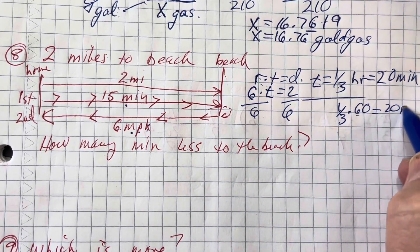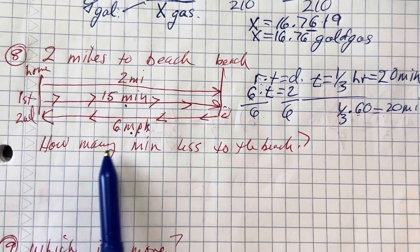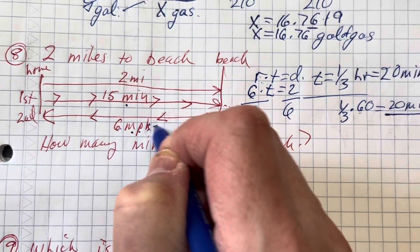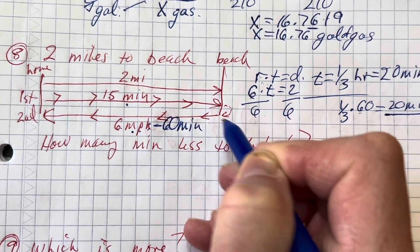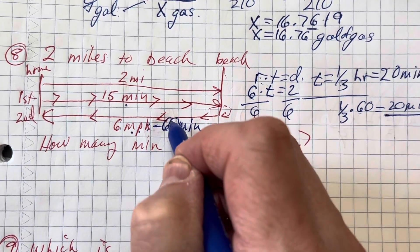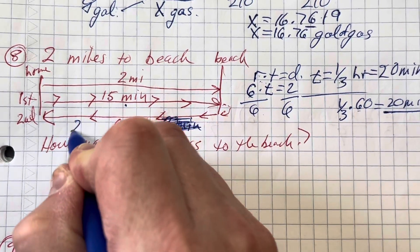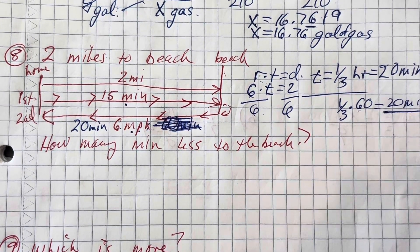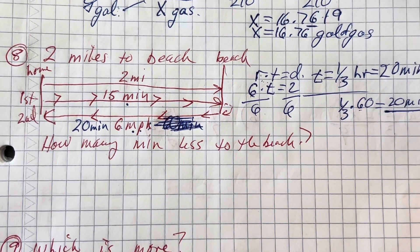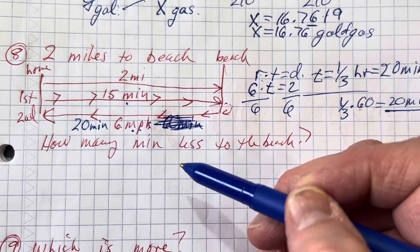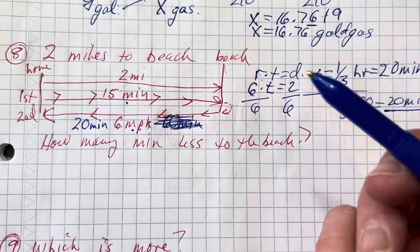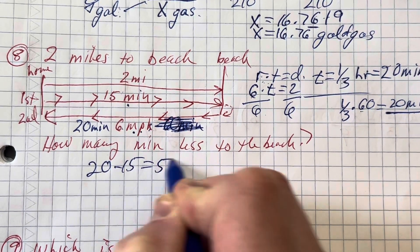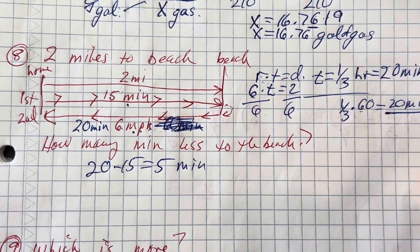20 minutes. So how many minutes less to the beach than from the beach? Well, this is 20 minutes. Not 60. 20. 20 minutes. 6 miles per hour means it's 20 minutes from the beach at 6 miles per hour. That means this person must have gone faster on the way to the beach. They sure did. The difference there is 5. So how many minutes less to the beach? It'll be 20 minus 15, which equals 5 minutes less.